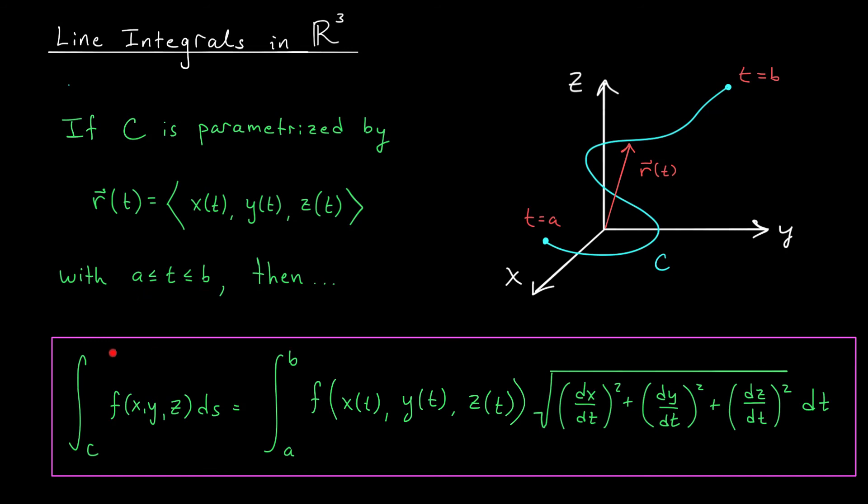We begin by parametrizing the curve just like we did before with t values ranging between a and b. If we can do that, then we define our line integral to be the integral from a to b of f with x, y, and z expressed as functions of t, and then we multiply by the norm of r prime dt. It's exactly the same process, except we have a third variable to worry about. Let's check out a quick example to wrap up this video.